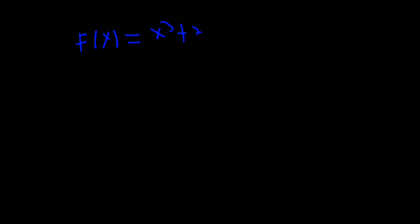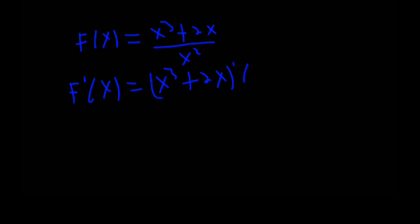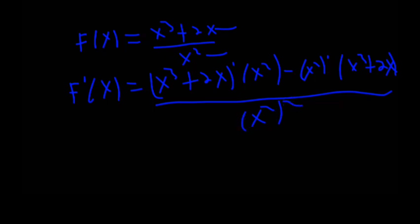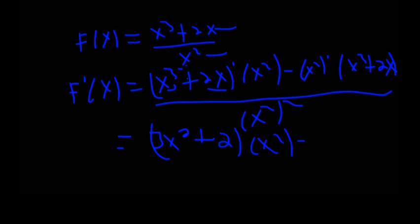f(x) is equal to x cubed plus 2x. Using the derivative rules, we take the derivative of x cubed plus 2x. The result simplifies to 3x squared minus 3x squared. The derivative of x cubed plus 2x gives us the final answer.